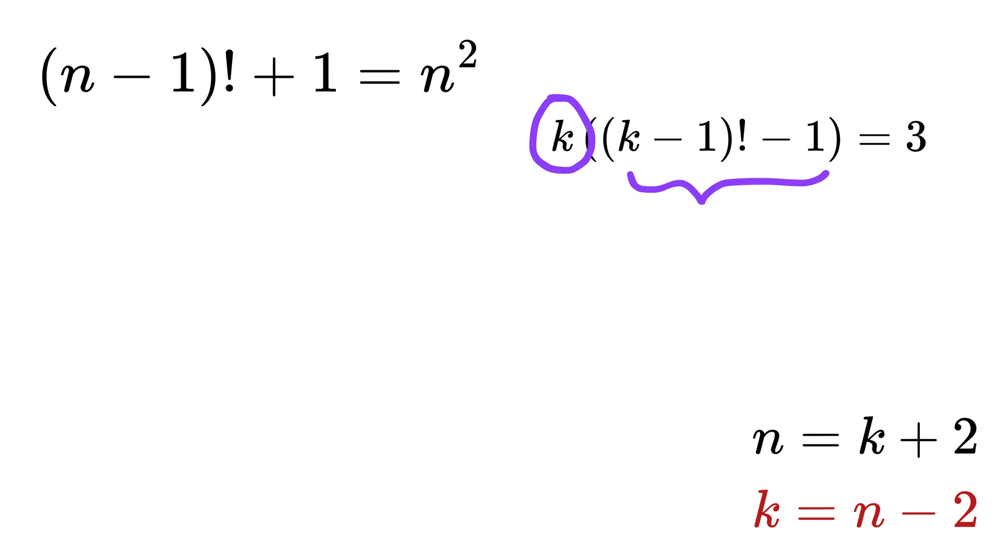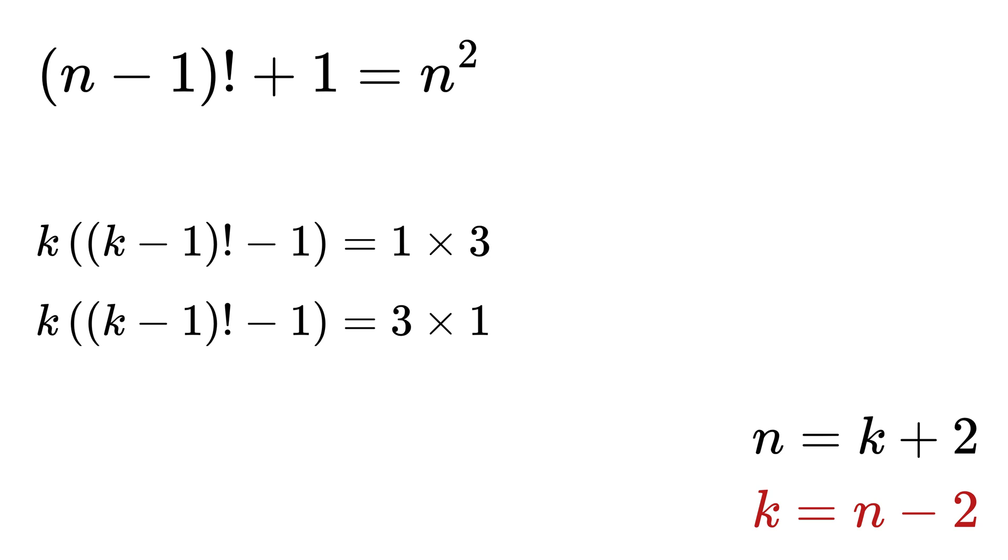Now, both these values must be an integer. Also, there are only two ways to factorize 3, which are 1 times 3 and 3 times 1. So there are only two options to satisfy this equality.